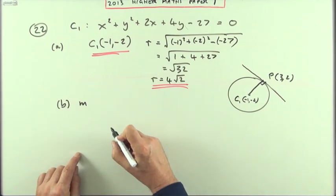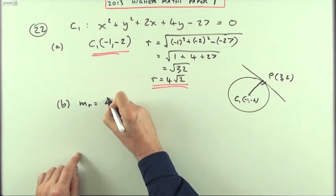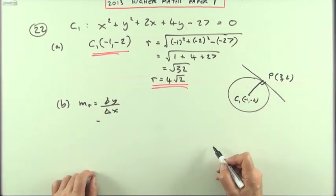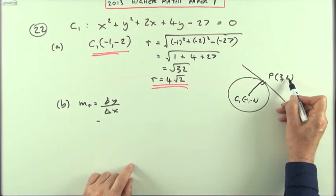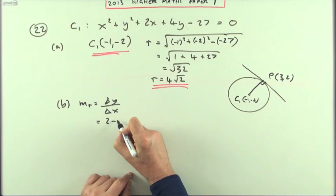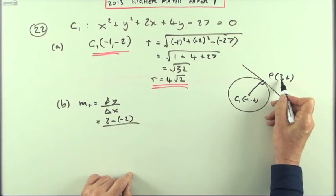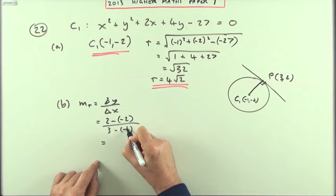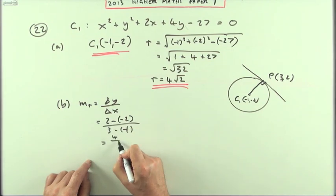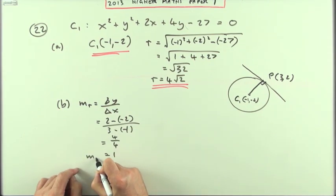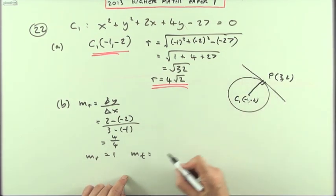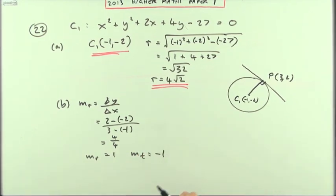So the first thing I'll do is I'll work out the gradient of the radius, which I could have called C1P, so that'll be the difference in the y-coordinates, 2 take away negative 2, the difference in the x's, 3 take away negative 1, which is going to give me 4 upon 4, which is 1, which means that the gradient of the tangent will be the negative of the reciprocal of that, will be negative 1.